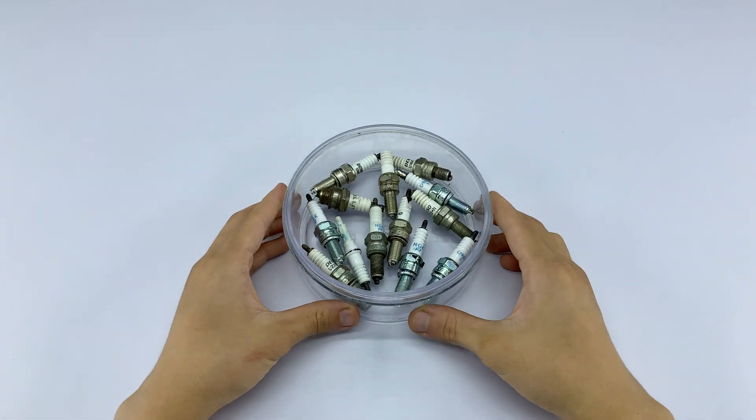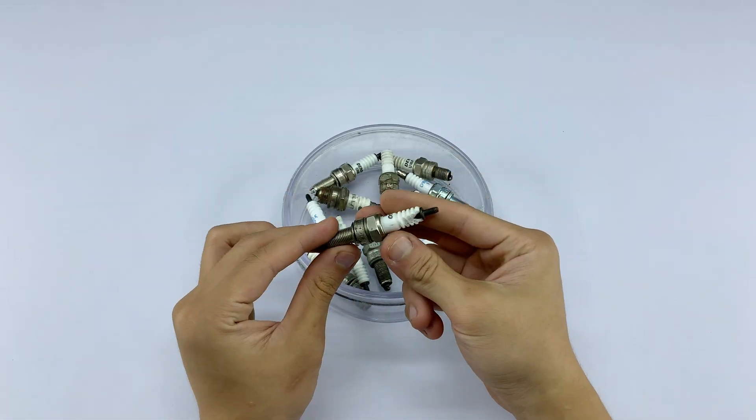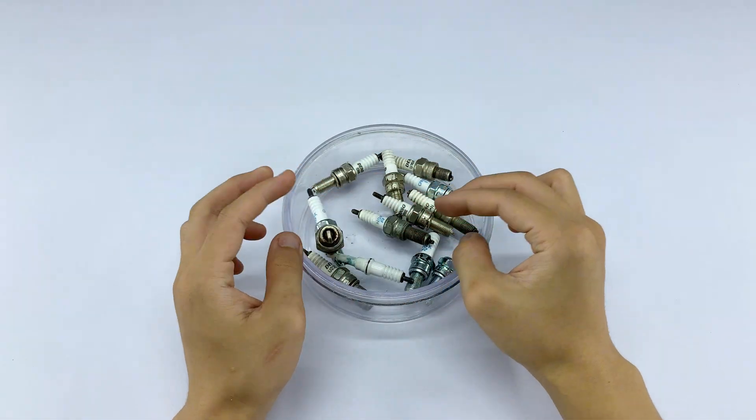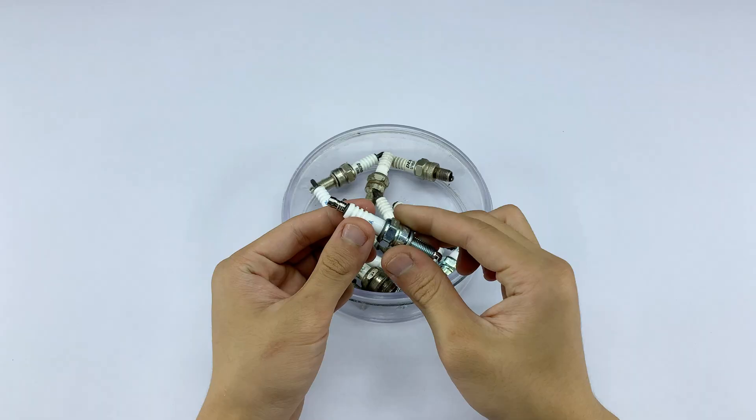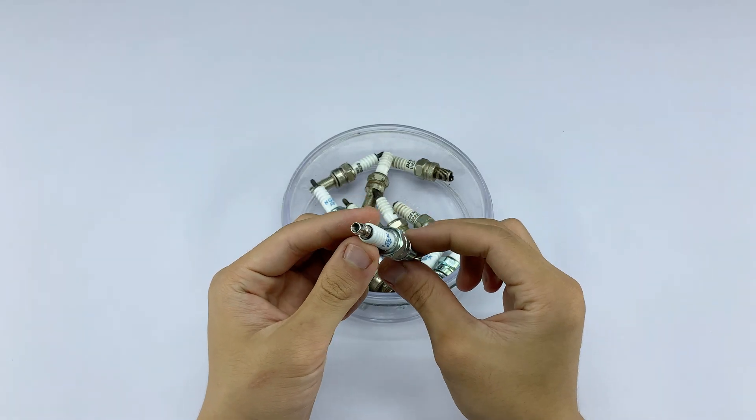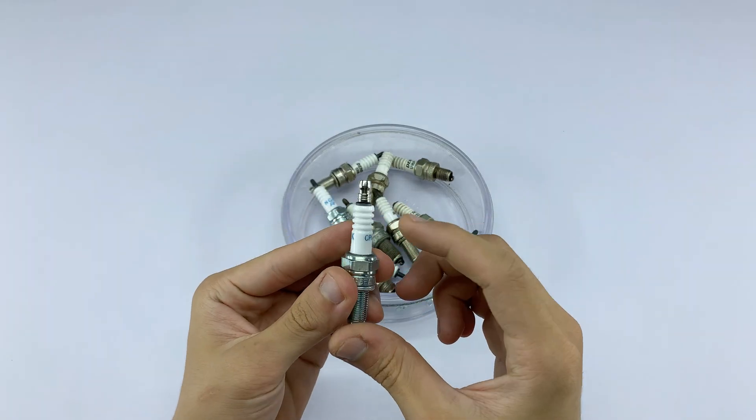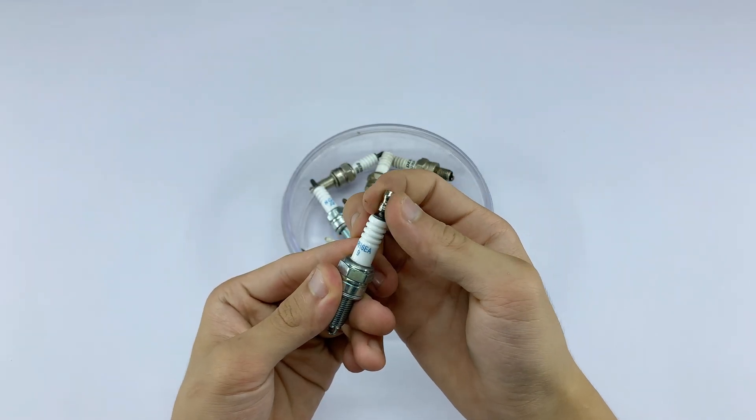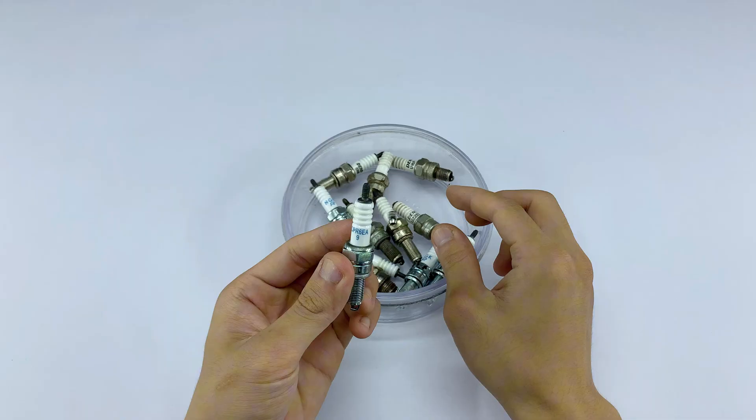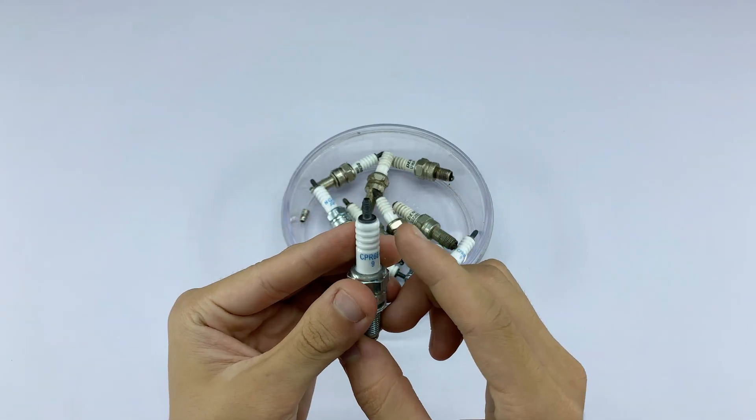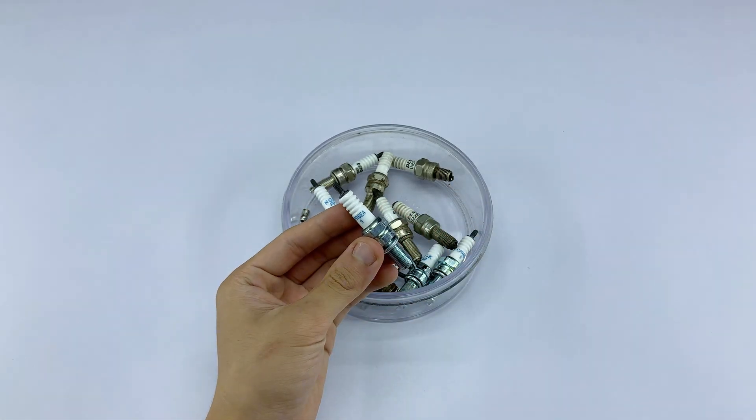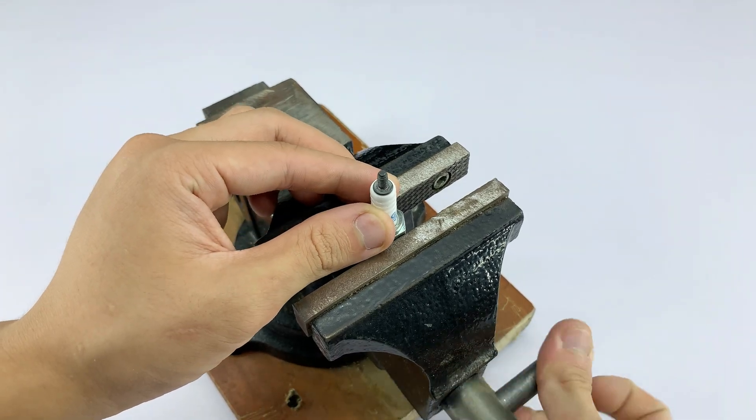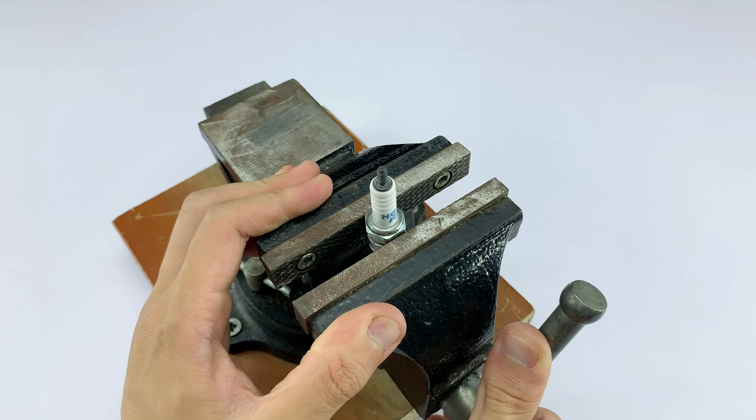In today's video, we're finally tackling that little pile of spark plugs left from the last session. But here's the good news: you only need one. That's right, just a single spark plug. With this tiny piece, I'm going to show you how to turn it into a mini handheld welding tool. Compact, simple, and surprisingly effective. It may look tricky at first, but trust me, if you follow the steps carefully, anyone can pull this off.